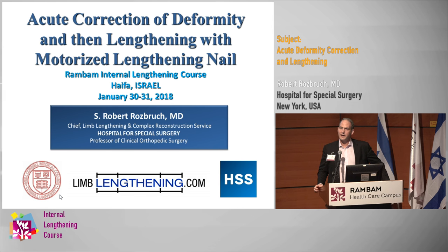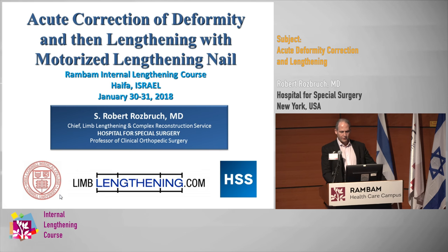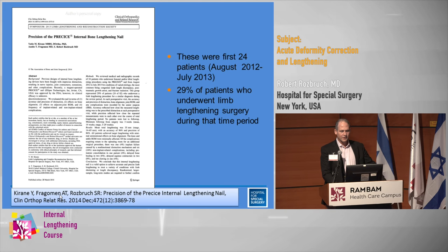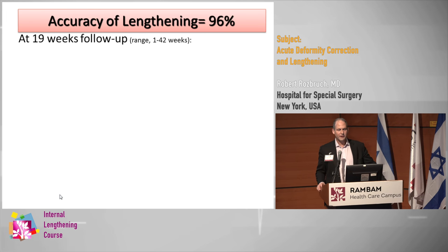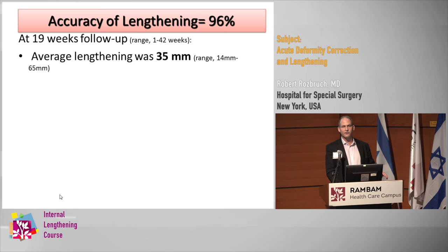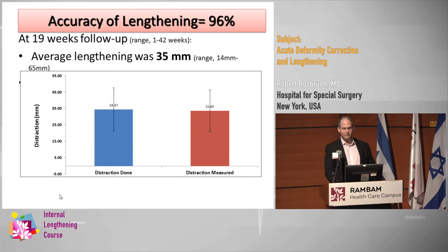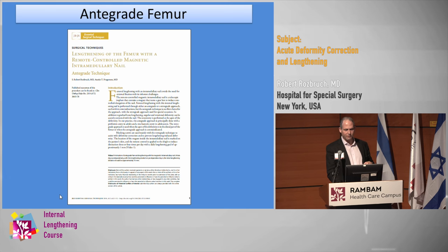I haven't had any fractures in that situation, though I would be hesitant to do it on somebody with osteopenia. So: acute deformity correction and lengthening. The accuracy of lengthening we found was 96% when using this technique, when we looked at our first cohort of lengthenings — which was an average of 35 millimeters — measuring the actual distraction compared to what was prescribed.